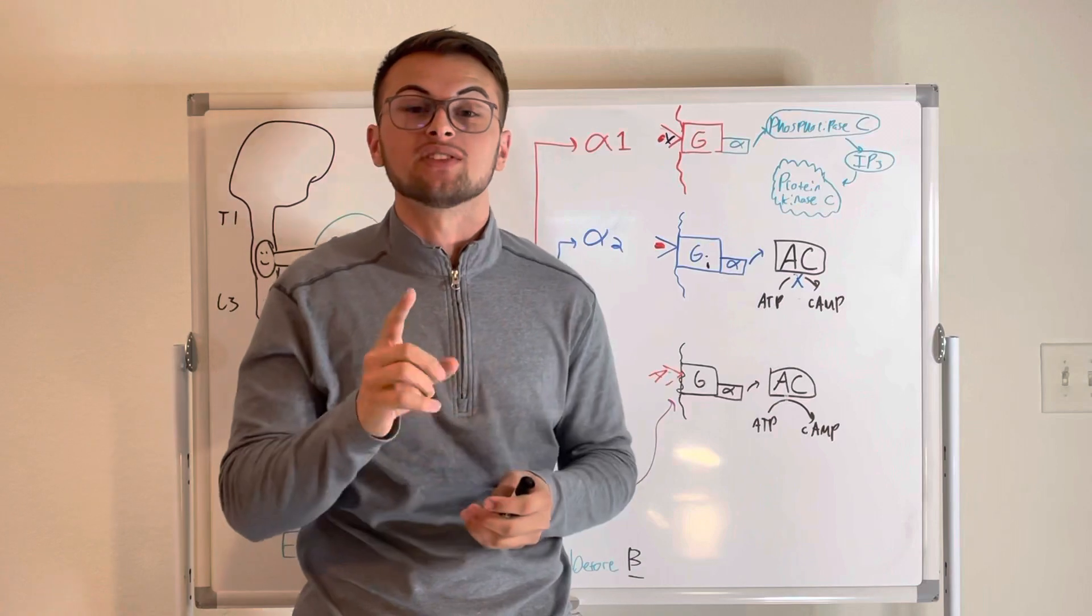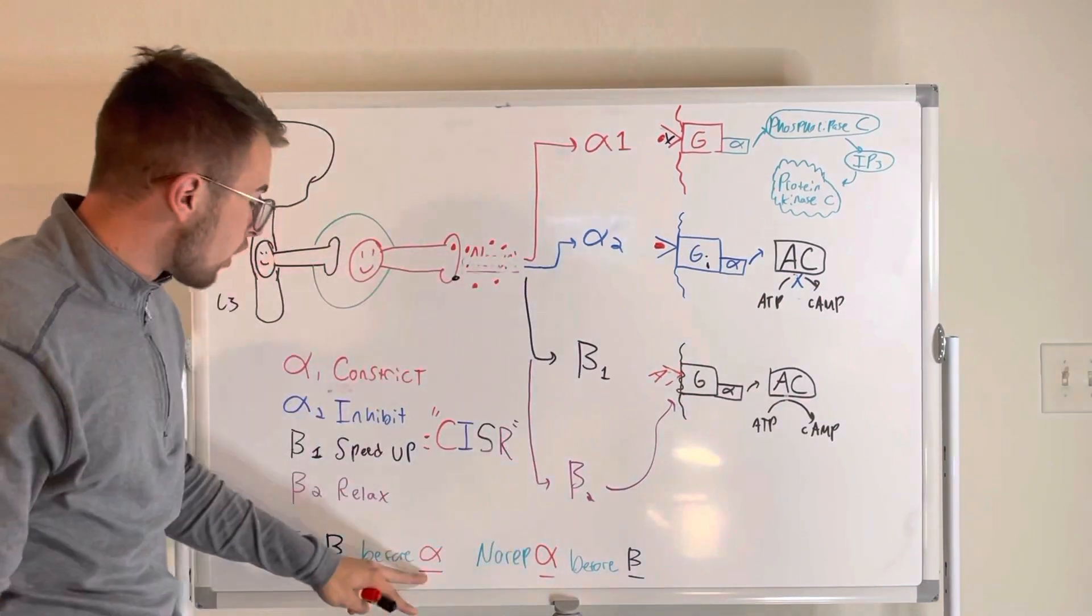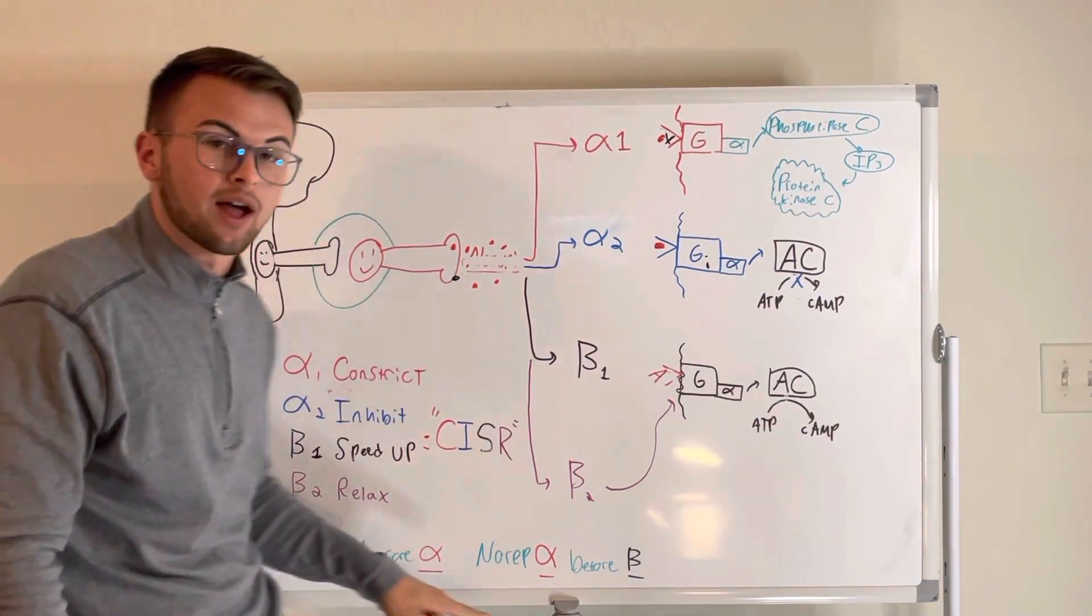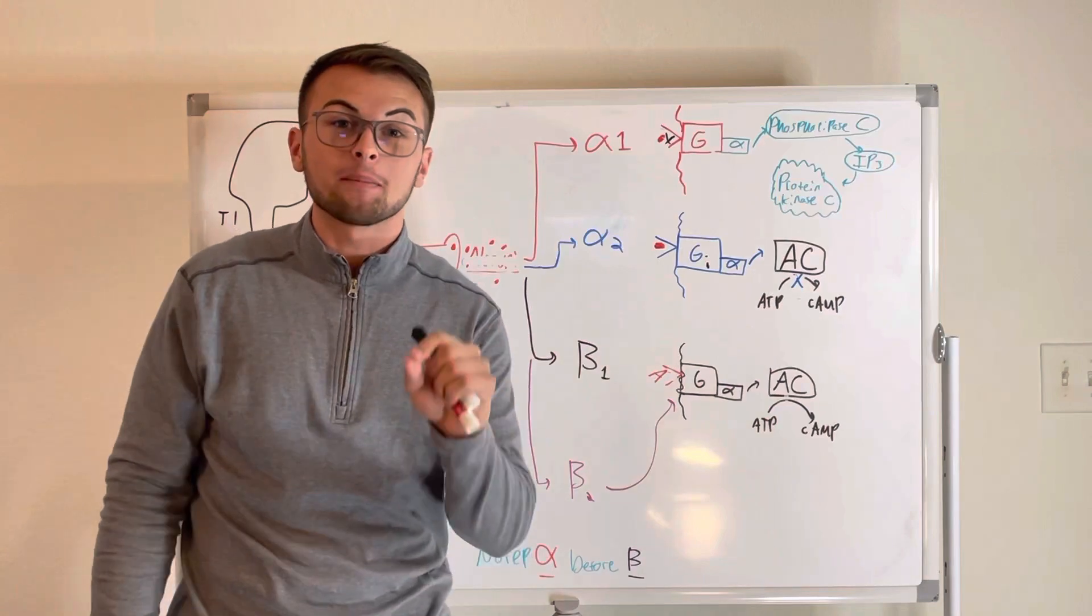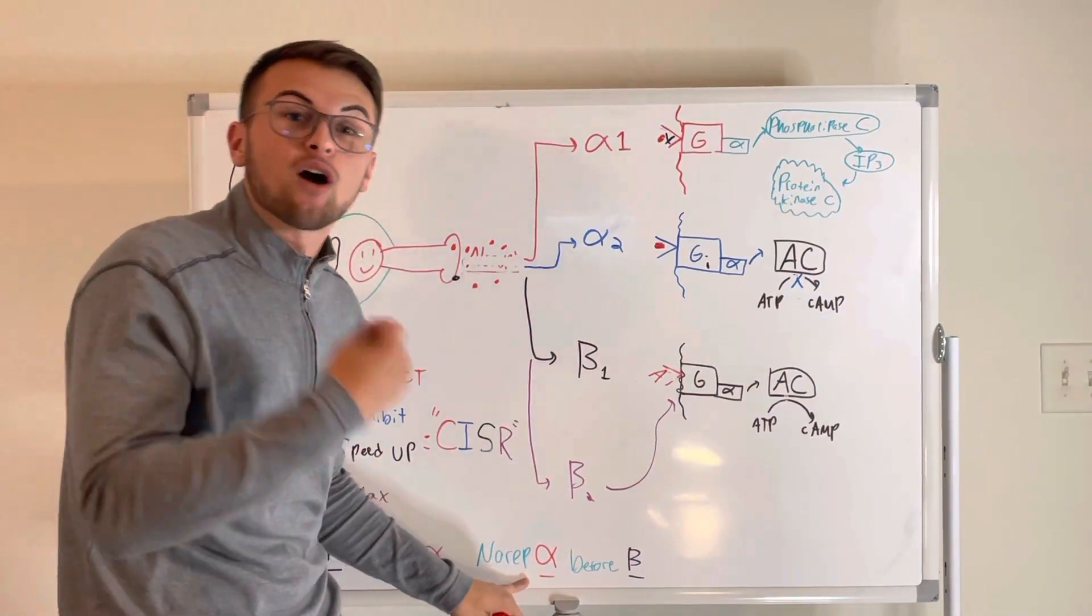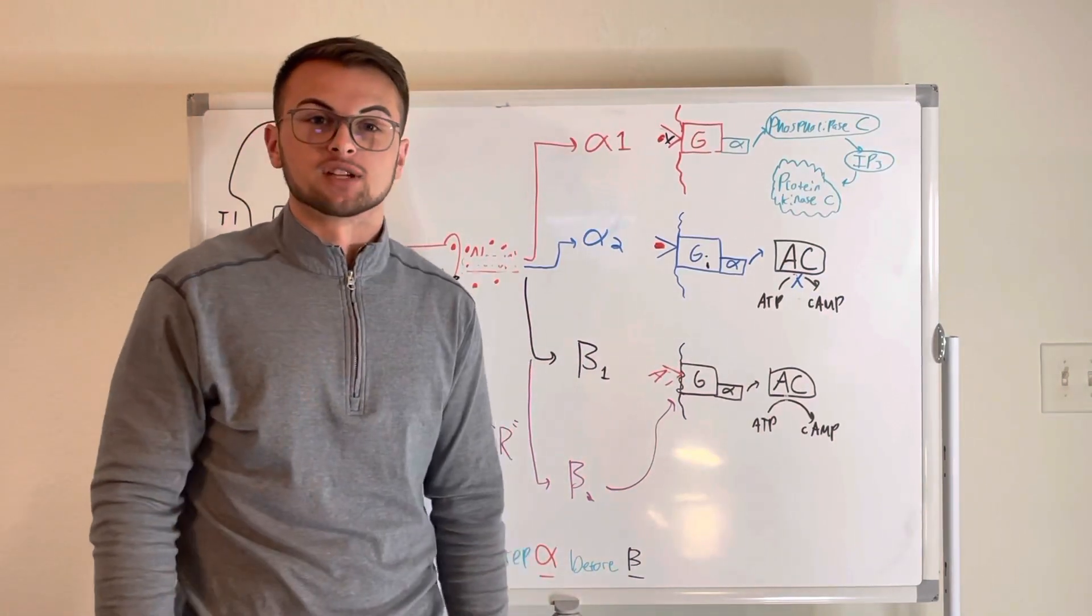Also, it will provide some alpha constriction to raise the blood pressure at higher doses. Remember, epinephrine B before A. Now, Noreup A before B. Norepinephrine will activate alpha constriction first before it activates the beta receptors.